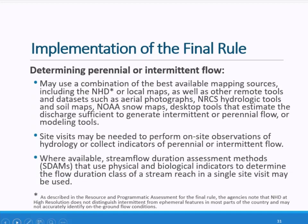The agencies intend to implement some of the key aspects of the final rule using various existing tools to assist in determining flow classification, including the NHD or local maps, aerial photographs, NRCS hydrologic tools and soil maps, NOAA, SNOMAP, other desktop tools to estimate streamflow discharges, or modeling tools. Site visits may be needed sometimes when making determinations for tributaries, as well as for other categories of waters.